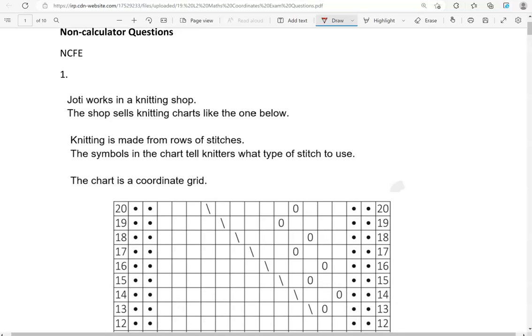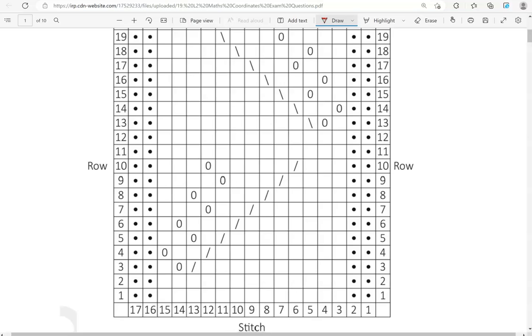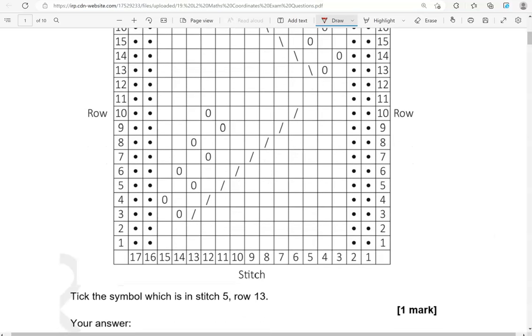Jotty works in a knitting shop. The shop sells knitting charts like the one below. Knitting is made from rows of stitches. The symbols in the chart tell knitters what type of stitch to use. The chart is a coordinate grid. Tick the symbol which is in stitch 5, row 13.